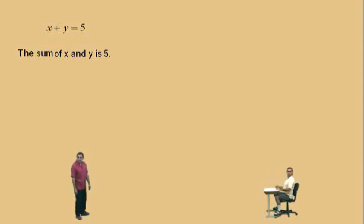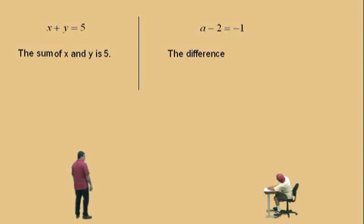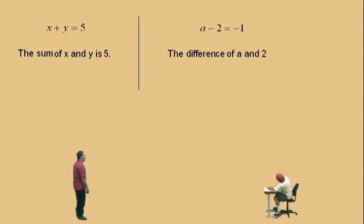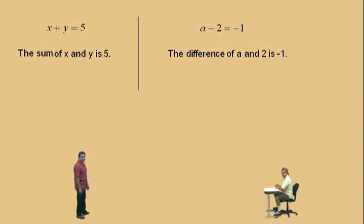Let's do another one. Is this a sum or a difference? It's a difference. It's the difference — that's right. Difference of what? A and 2. That's right. Now bring us home. Is negative 1. Very nice. The difference of a and 2 is negative 1.